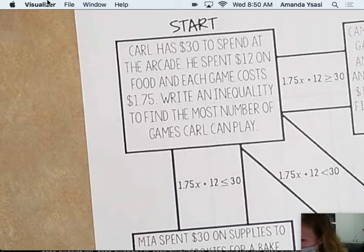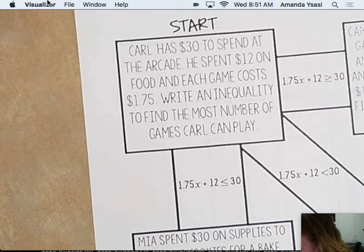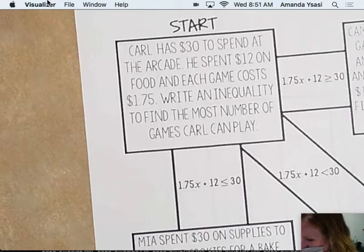Carl has $30 to spend at the arcade. He spent $12 on food, and each game costs $1.75. Writing inequality, find the most number of games Carl can play.